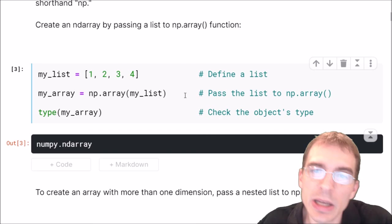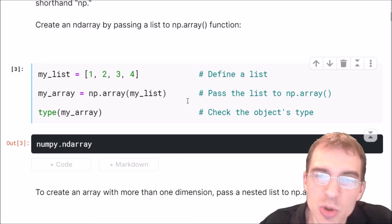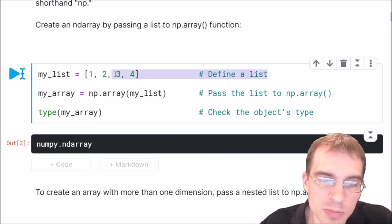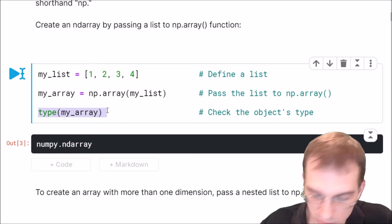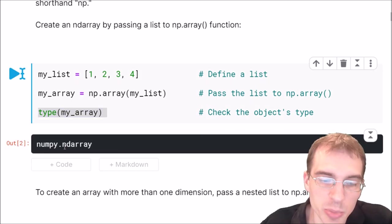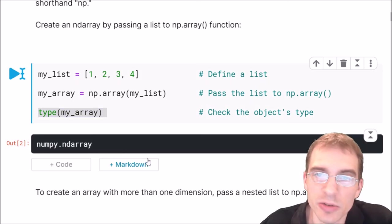Now that we've imported numpy let's start learning how to use it. To create a numpy array you can pass a list into the numpy.array function. Here we're defining a new list my list with four values and now we're going to turn it into a numpy array. We say np.array and pass the list in as the argument. If we check the type of my array it will show that it is indeed a numpy array or ndarray.